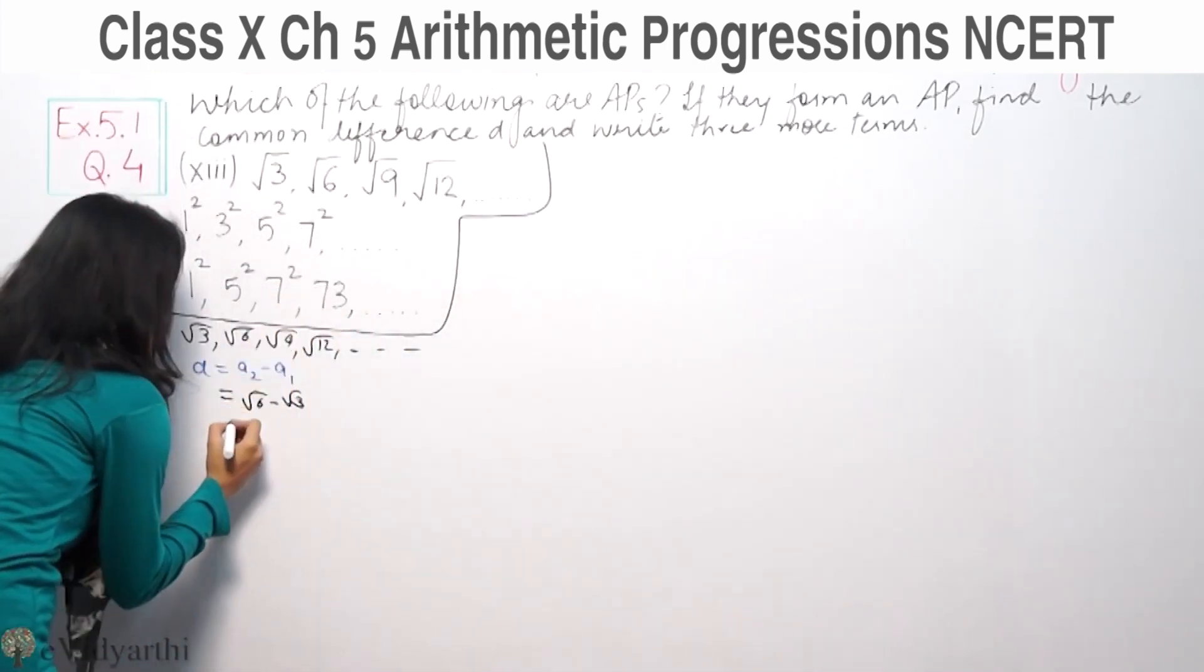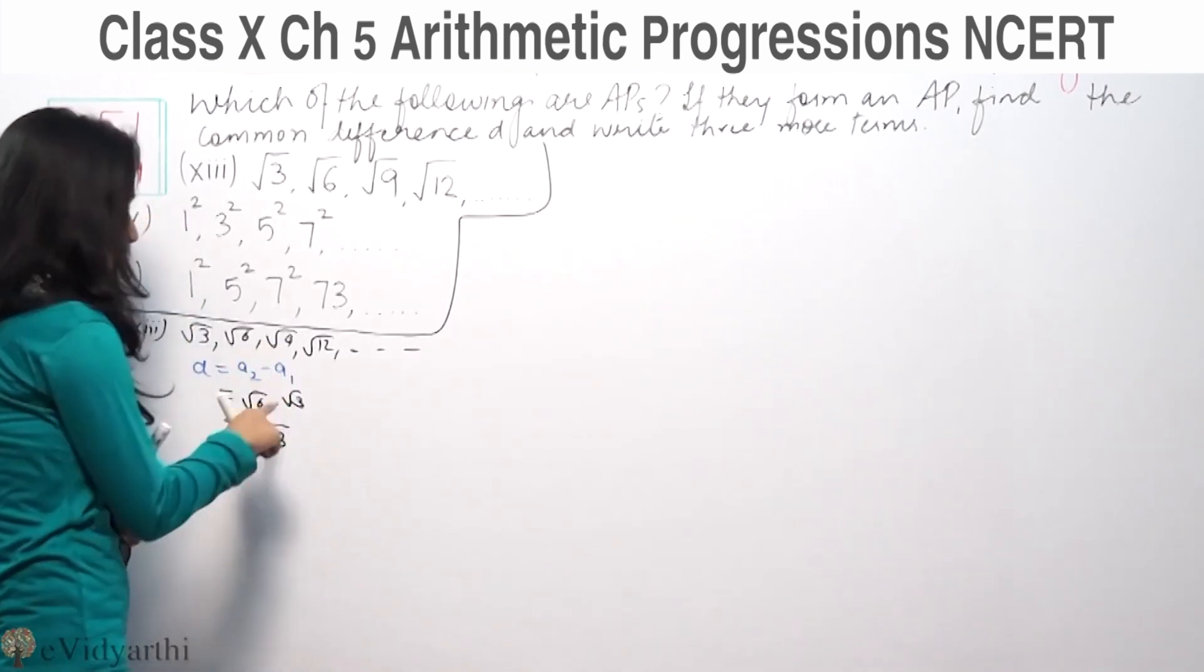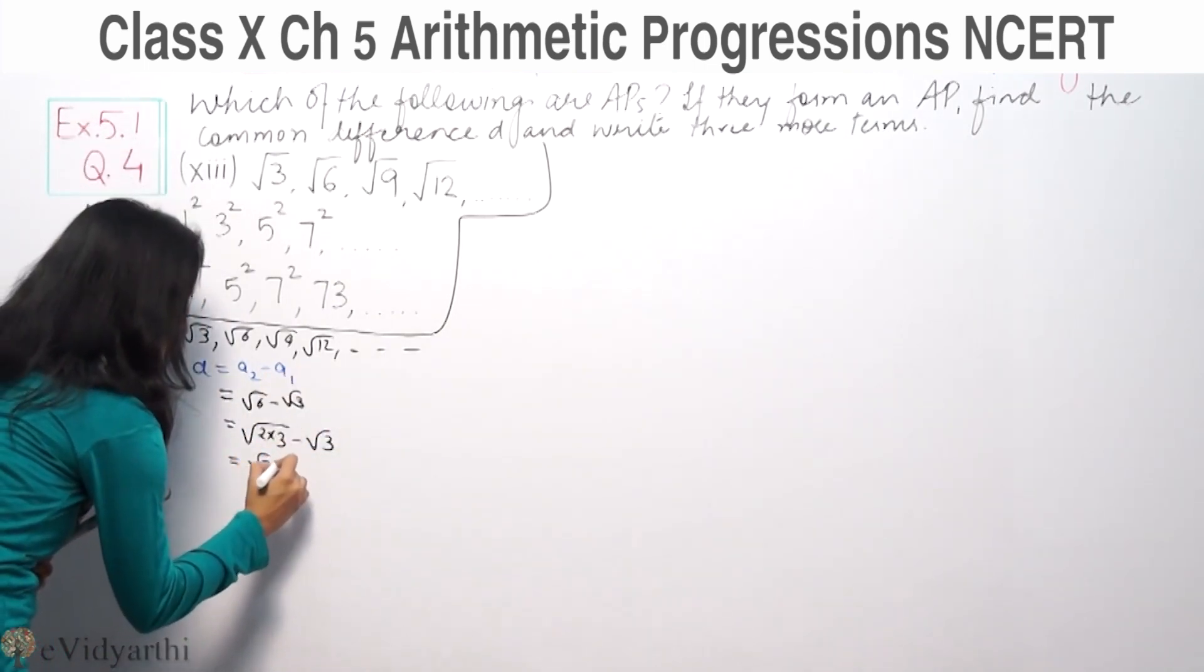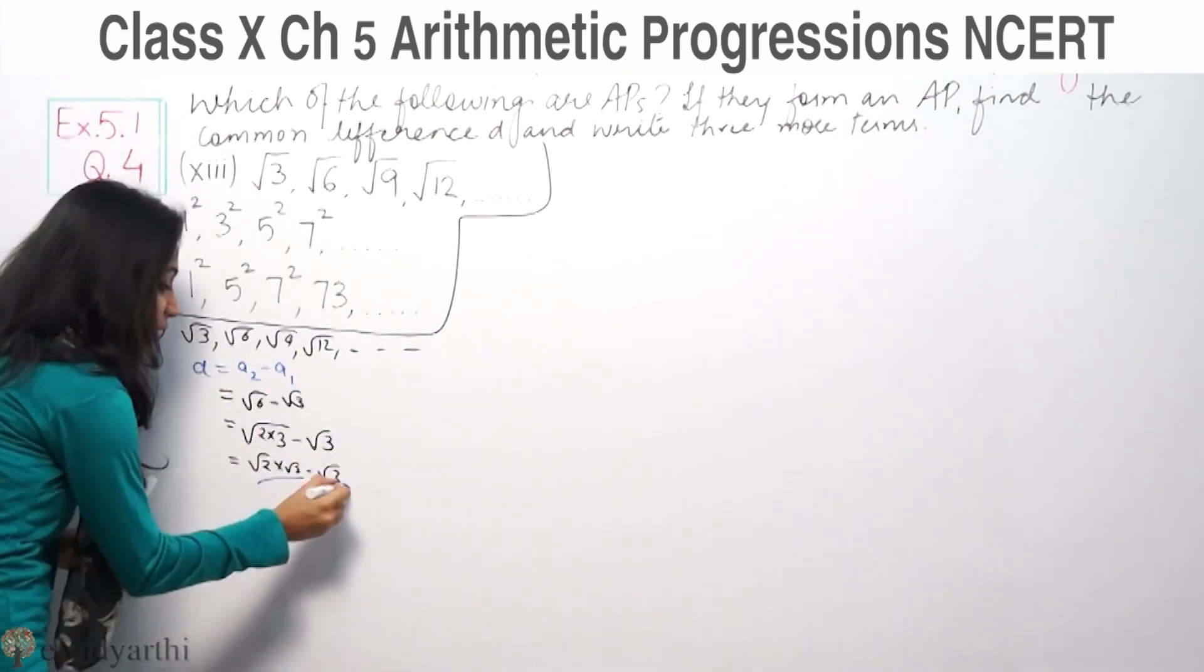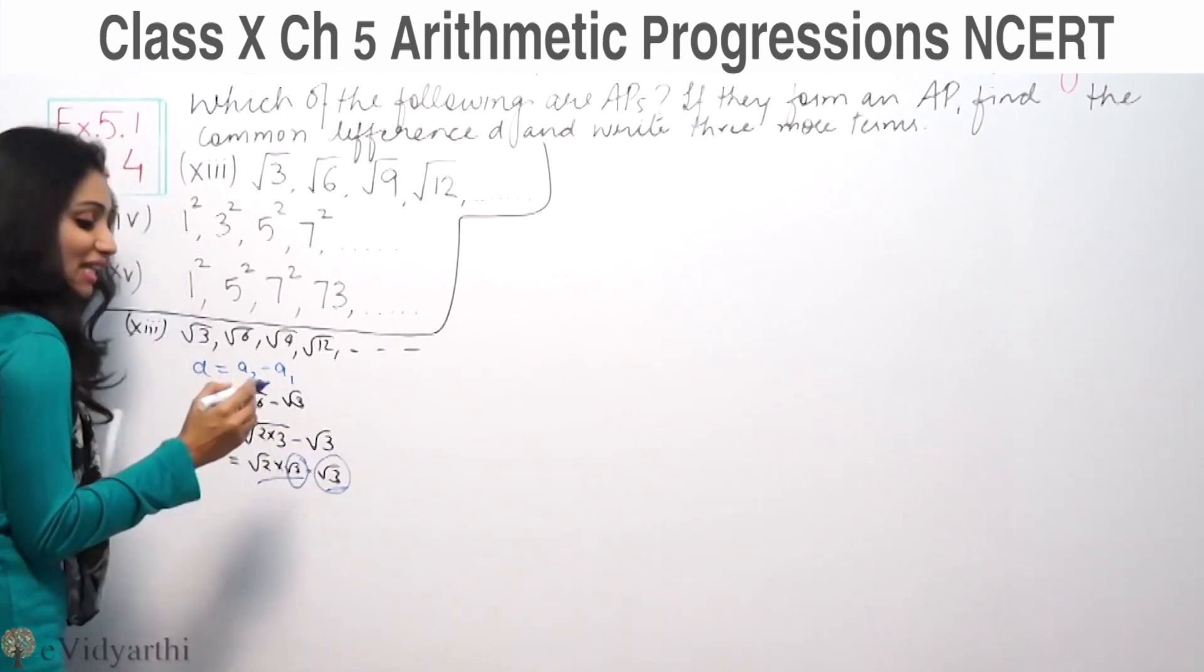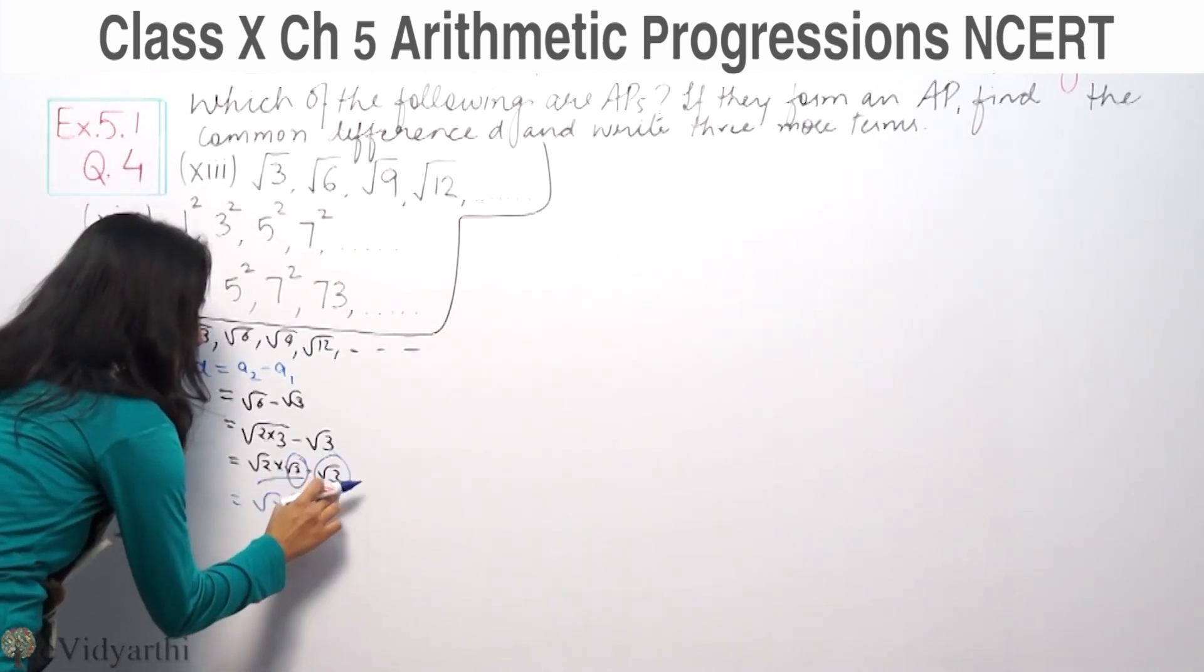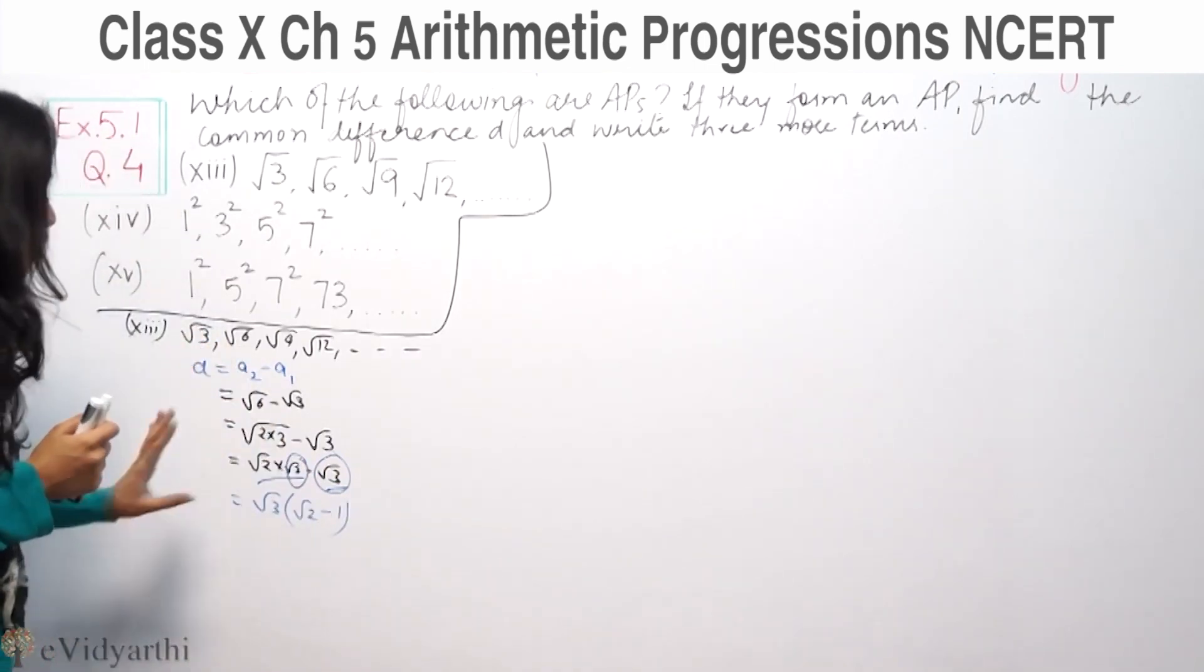We can write root 6 as root 2 into root 3. What is common between these terms? We have root 3 common. So take out root 3 as a factor. Bracket of root 2, then a negative sign, root 3. This is the common difference.